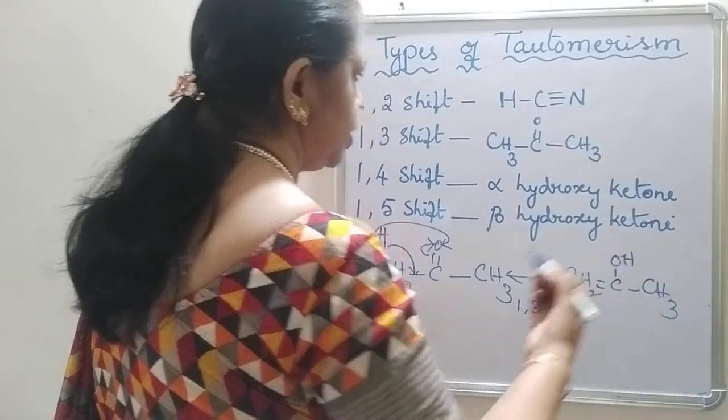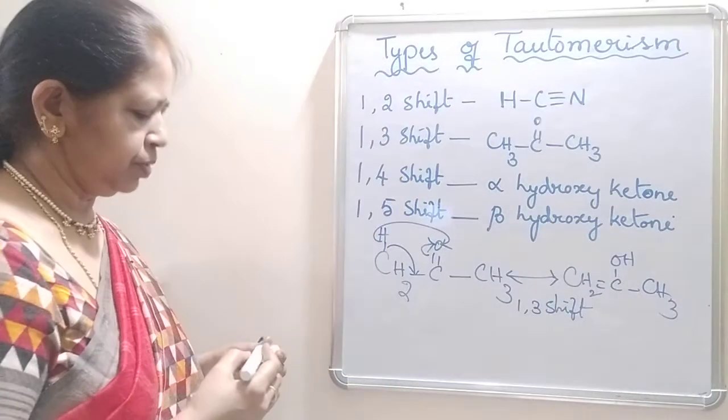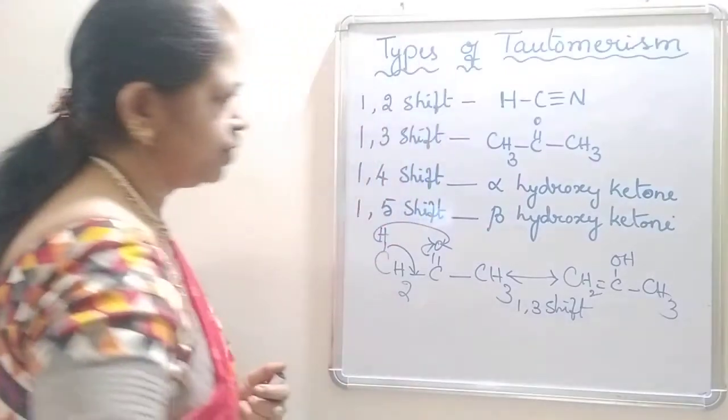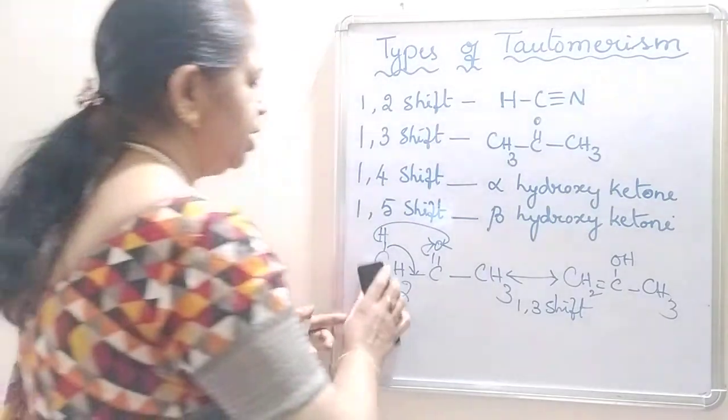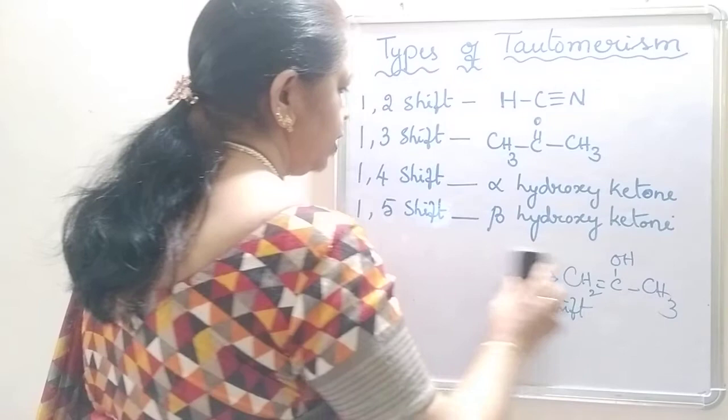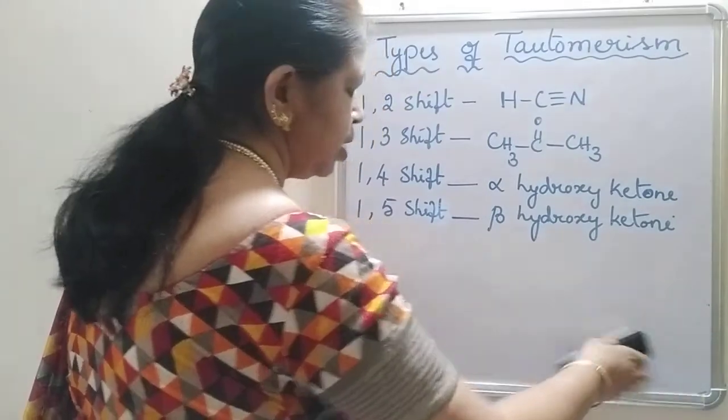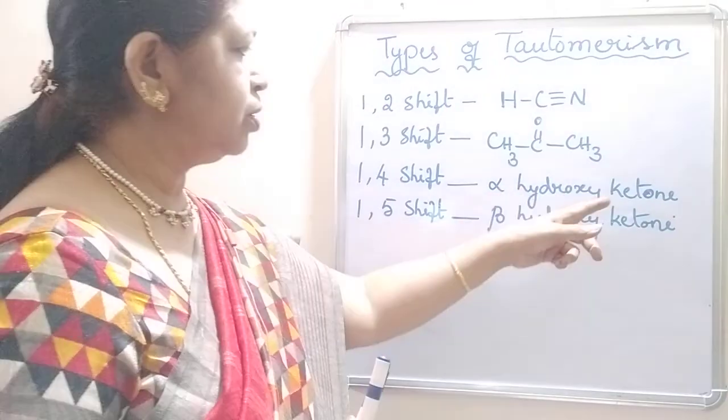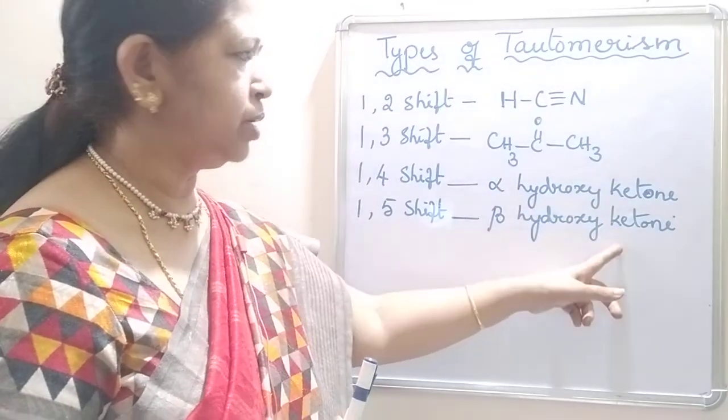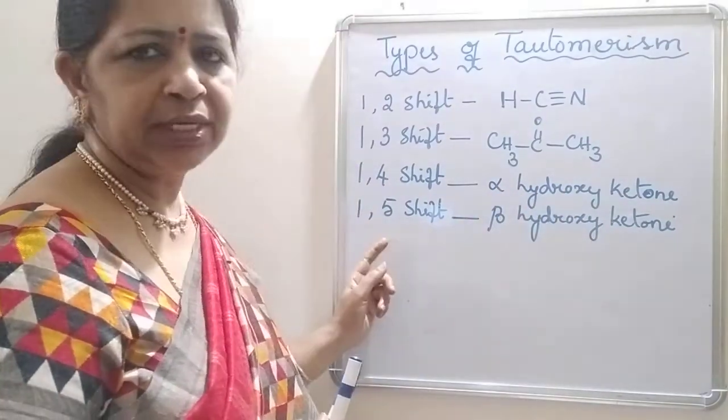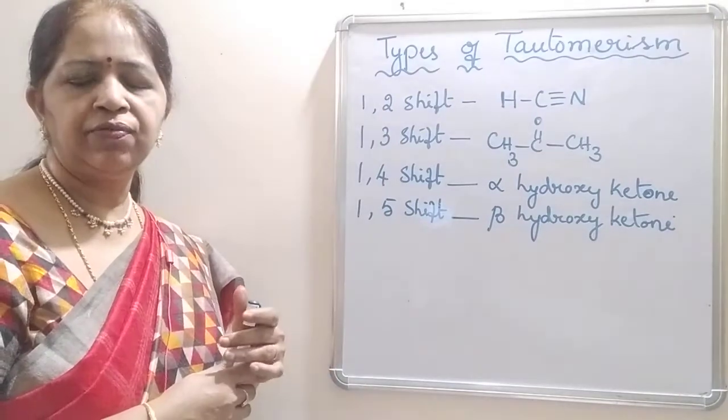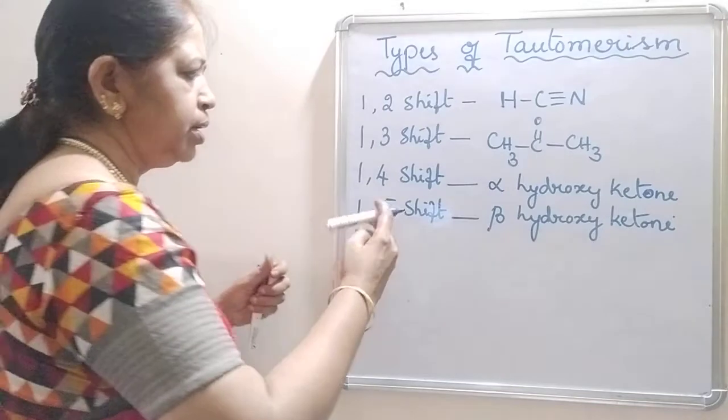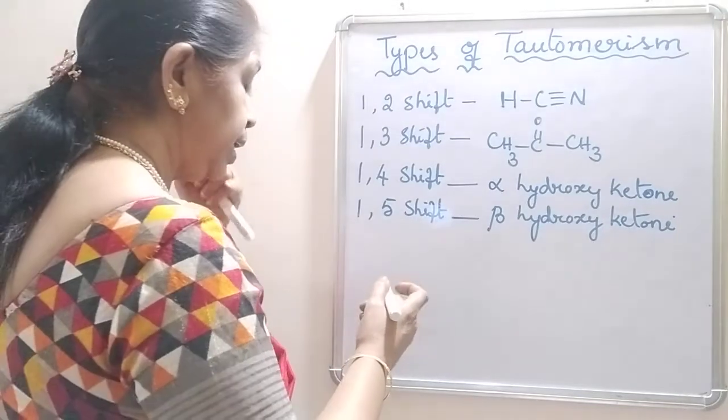This is the 1-3 shift. The interesting ones are 1-4 and 1-5 shifts. This 1-4 and 1-5 shifts are observed in alpha hydroxy ketones and beta hydroxy ketones. These shifts result in the formation of cyclic ethers.